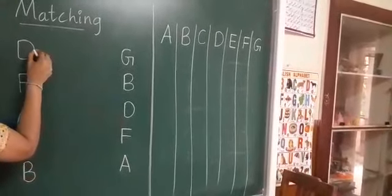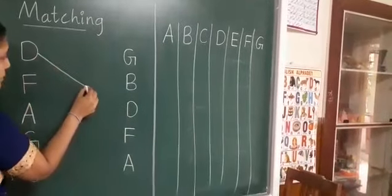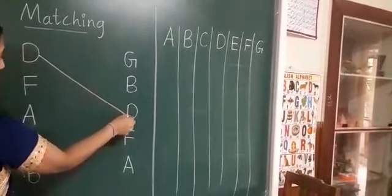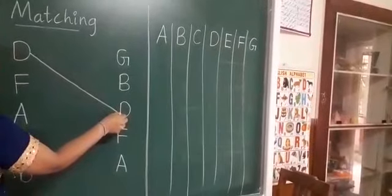Now, hold the pencil near the D and draw a line towards D. Match it. Next.